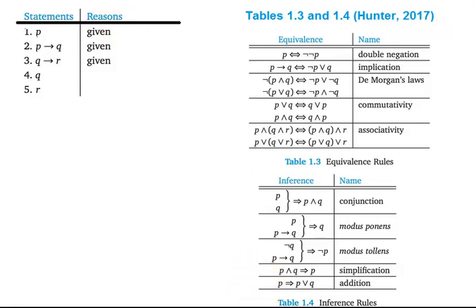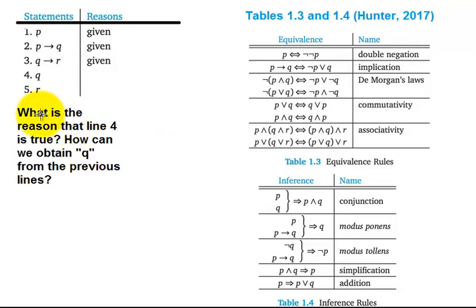The idea with these proof sequences is the following. We ask ourselves, what is the reason that line 4 is true? How can we obtain Q from the previous lines?